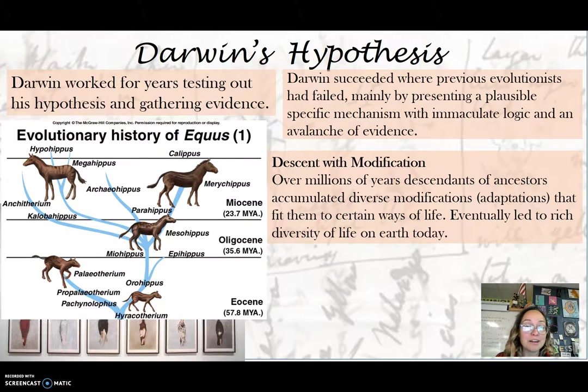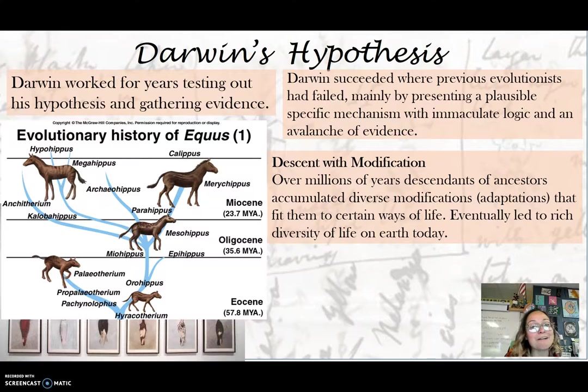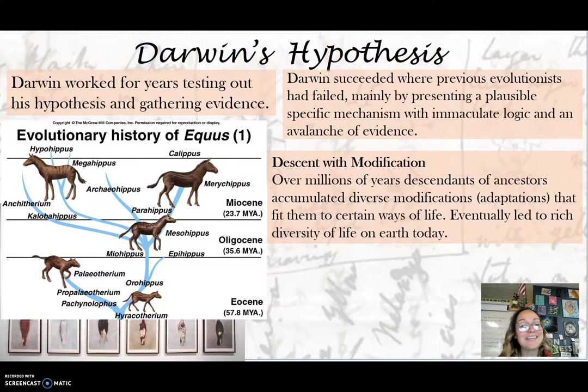You can see the evolution of horses over 50 million years — how depending on their environment, they get longer legs and different teeth. We'll talk more about that in class.